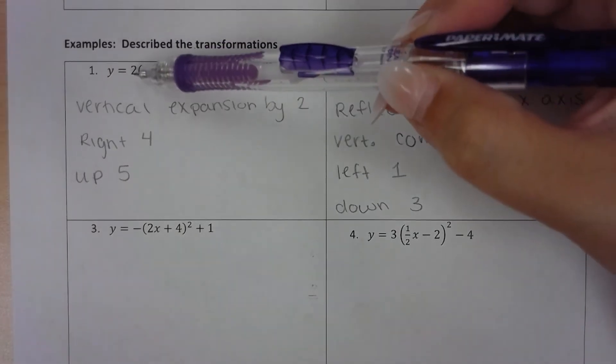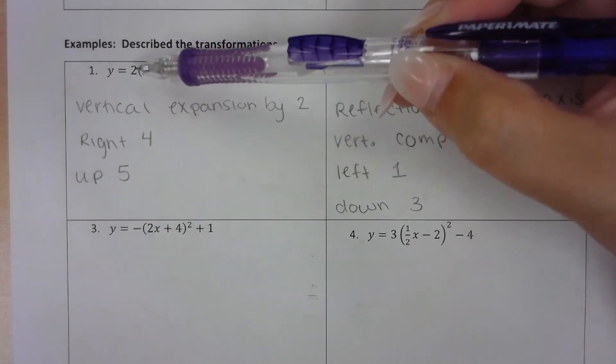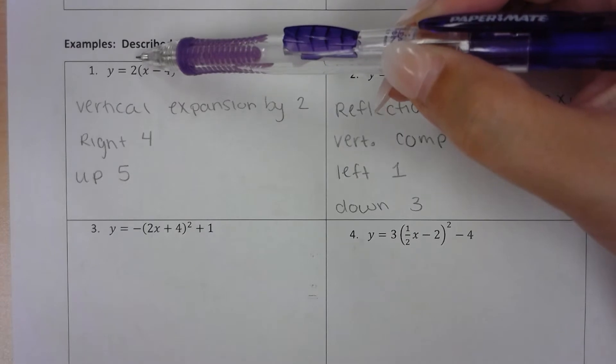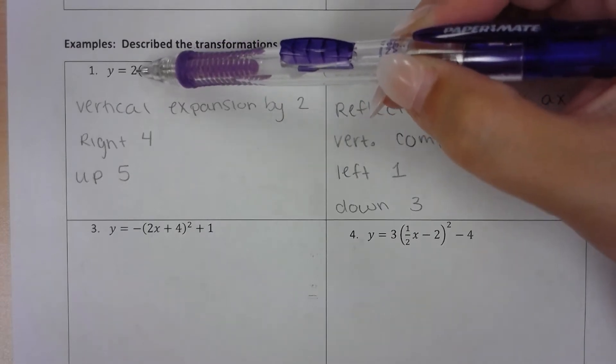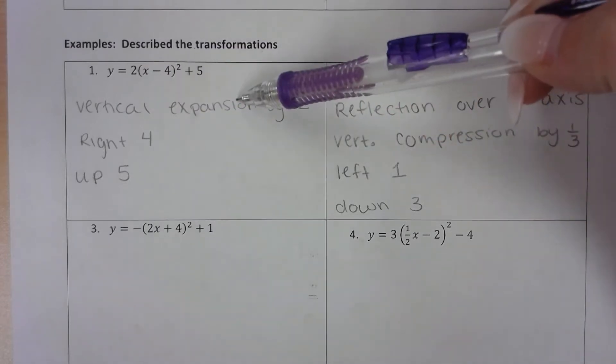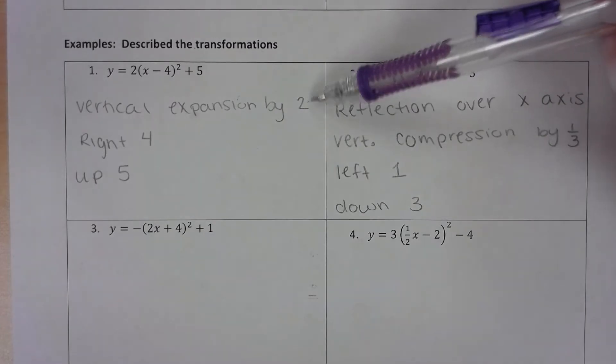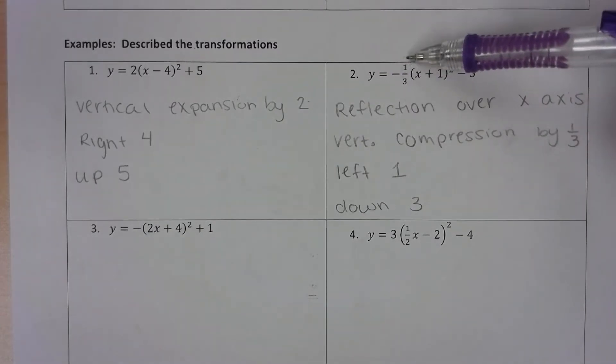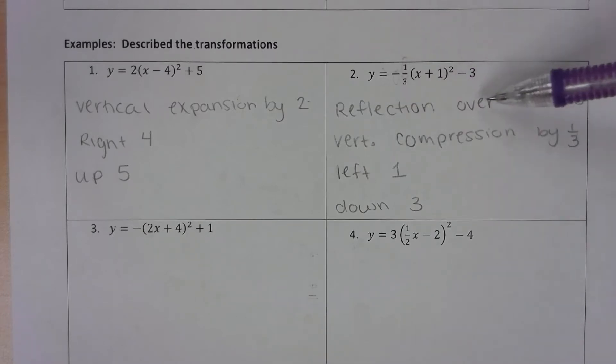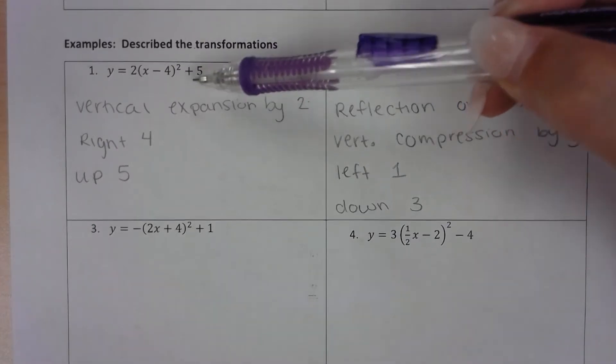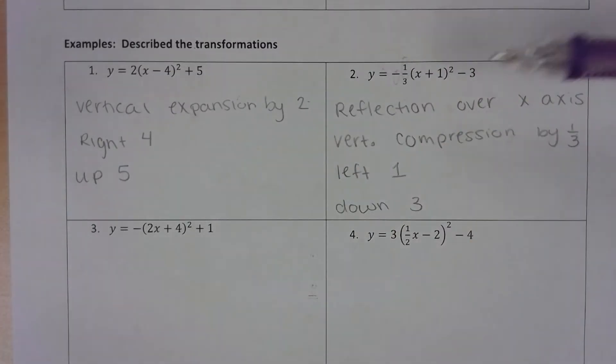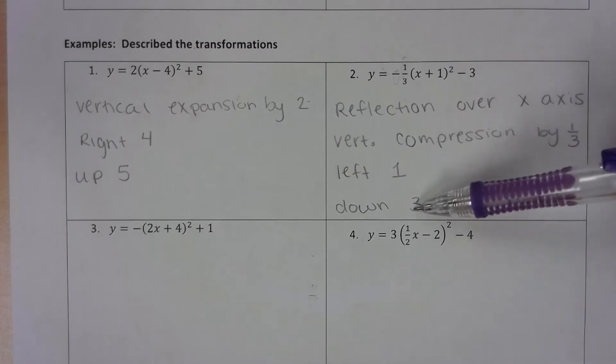Remember any number in front of the parentheses is going to be either a vertical expansion or compression. Anything vertical is typically what you would think. So if that's a 2, then it's going to be a vertical expansion, getting bigger by 2. If it's a one-third like it is here, then that's a vertical compression by a third. The negative tells us a reflection over the x-axis. The plus 5 at the end tells us up 5, and the minus 3 at the end tells us down 3.